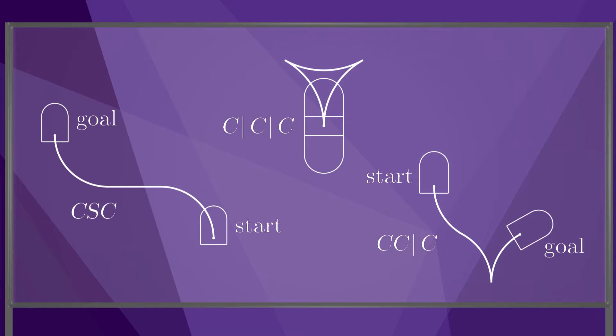Here are examples from three of the nine path classes. The first shortest path is a CSC path. The second path reverses the car's orientation using two cusps. The third shortest path has a single cusp.